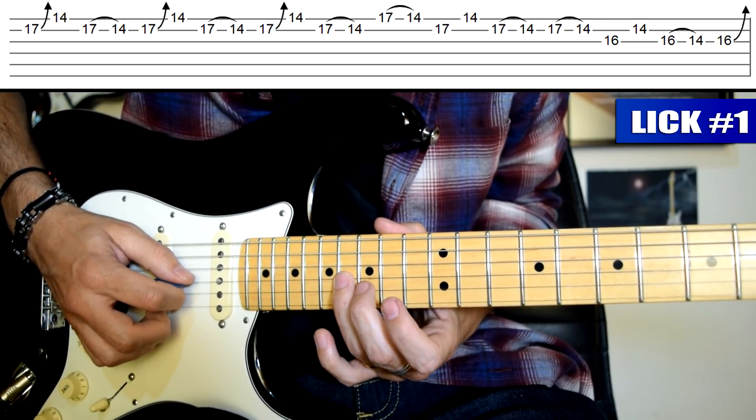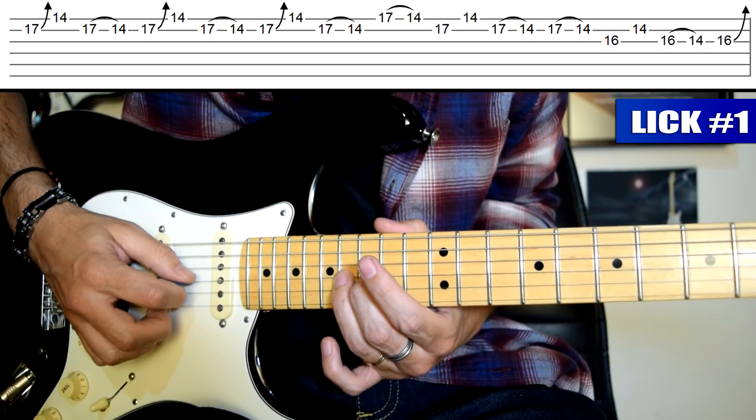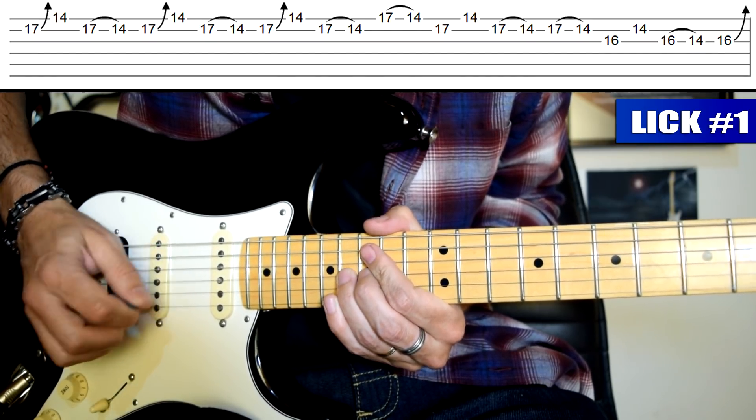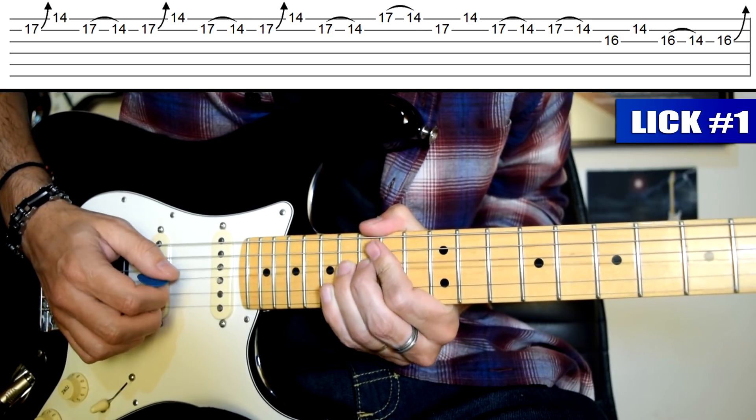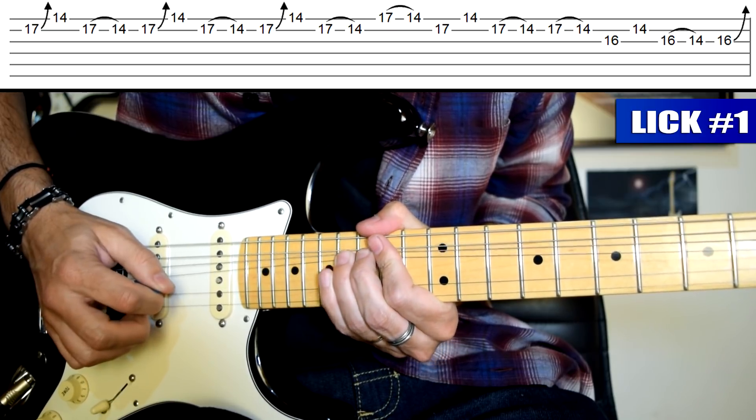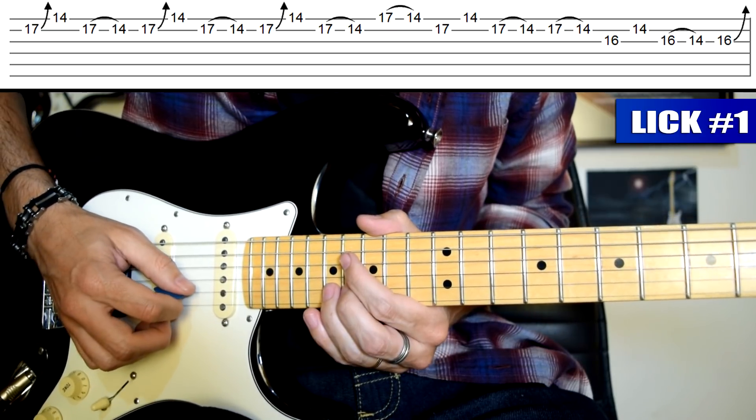Toco con púa hacia abajo y pellizco y levanto con el dedo 3. Y ahora dedo 3 traste 16, dedo 2 traste 15 de cuerda 3, púa abajo y hago una estirada de un tono hacia arriba. Y le doy vibrato como en la primera nota del fraseo. Y ahí tengo todo este primer fraseo.